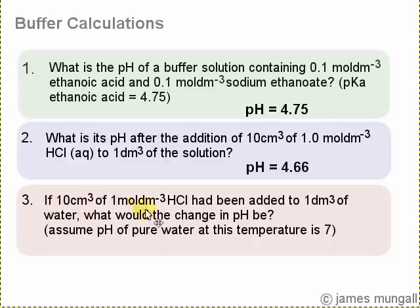And in this third part we're going to add the same amount of acid, 10 cm³ of 1 mol per decimeter cubed HCl, but this time we're going to add it to 1 decimeter cubed of water and find out what the pH change will be. We're going to assume that the pH of the water at this temperature is 7.